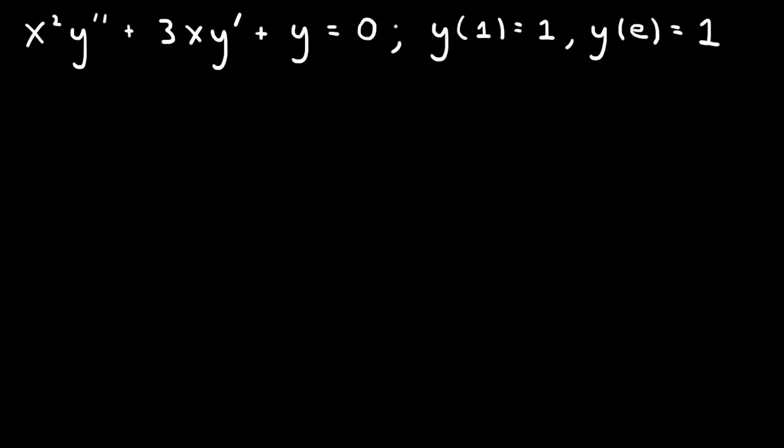Let's consider the Cauchy-Euler equation given by x squared y double prime plus 3xy prime plus y equals zero, with the two-point boundary value conditions y of 1 equals 1 and y of e equals 1. This is a Cauchy-Euler equation because the y double prime is multiplied by x squared, the y prime is multiplied by x, and the y has no x multiplication.